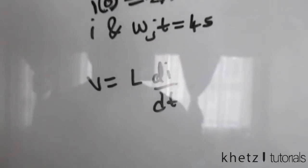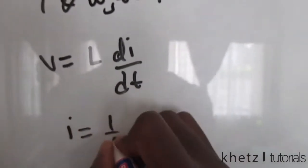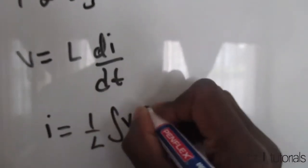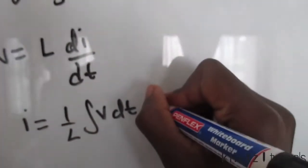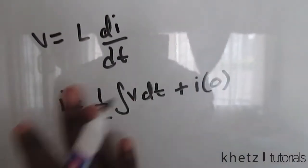To finally have a formula which says i is equals to one over L integral of v dt, not forgetting to add the initial condition which we're given in the question.